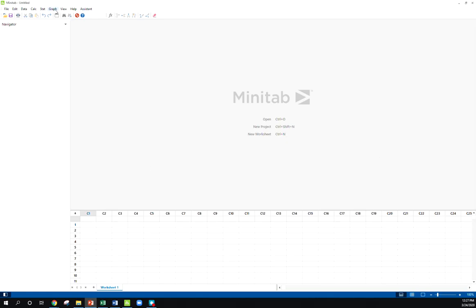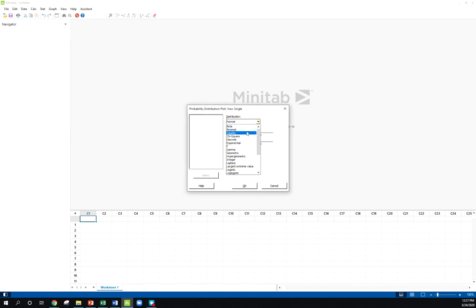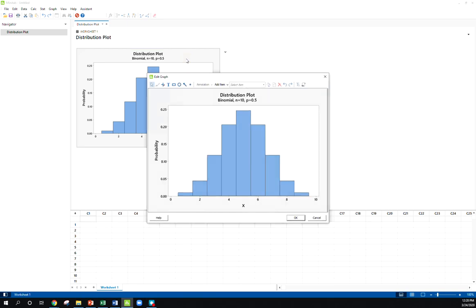So here if I go to graph, probability distribution plot view single, by default it'll be on normal, but we want to look at the behavior of our binomial here. So let's just take a binomial, say 10 trials, and probability, let's say 0.5, like 10 coin tosses or something like that. Now let's graph this and see what it looks like. Okay, so here's our binomial graph. So if we picture overlaying a normal curve over this graph, I think it would look pretty good. I think we would feel safe to say that we could approximate this binomial distribution with a normal.